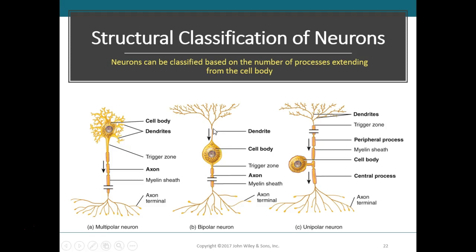Bipolar neurons have one main dendrite and one axon. The cell body has one main dendrite with multiple branches and one axon. These are classified based on the number of processes that extend from the cell body — only two processes, one dendrite and one axon, making this a bipolar neuron. These are found in the retina of the eye, the inner ear, and the olfactory area of the brain.